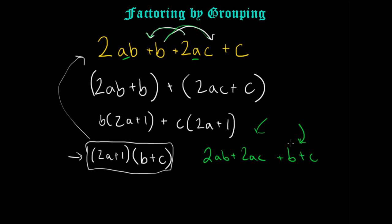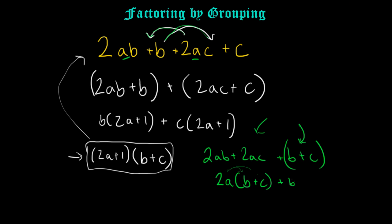Here there's nothing to factor from (B plus C), but from (2AB plus 2AC) I can definitely factor out 2A. That gives me 2A times (B plus C). And the second group is just plus (B plus C). Now (B plus C) is the common factor between the two groups — just like (2A plus 1) was common in the previous approach. If you imagine a coefficient in front of the second (B plus C), it would be a 1.